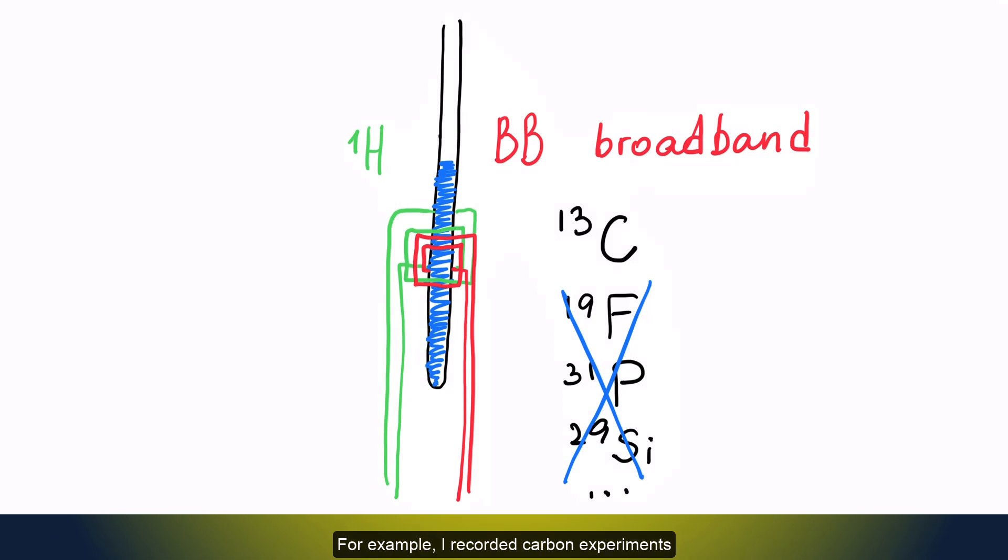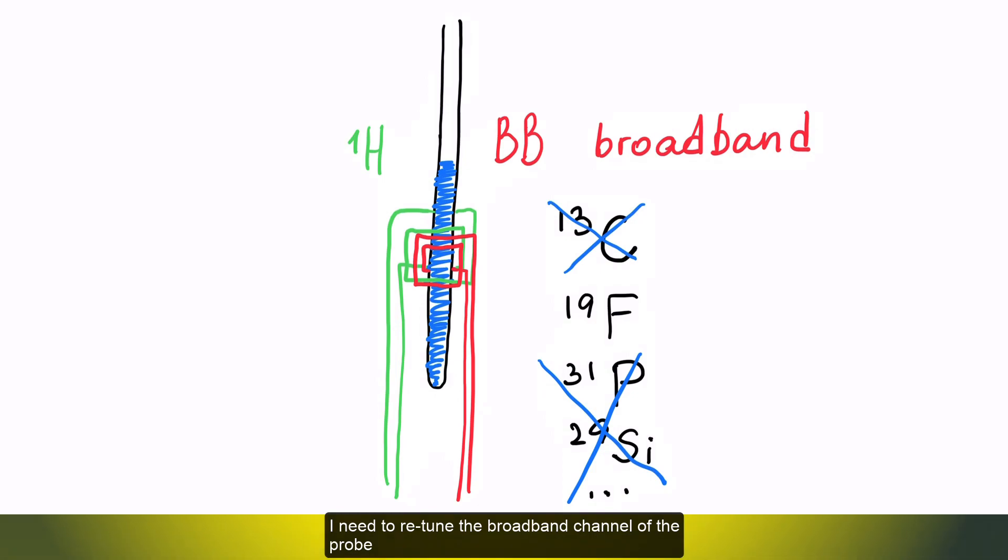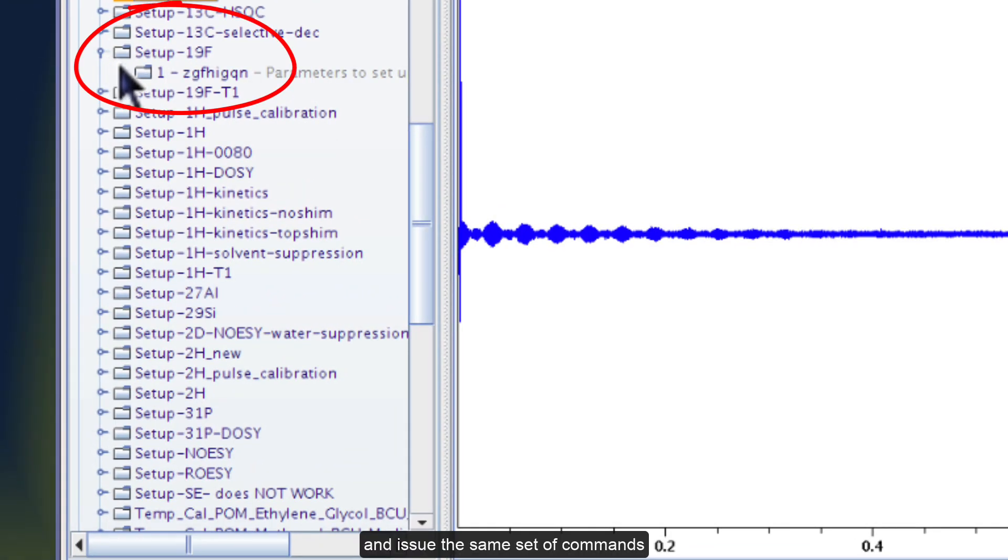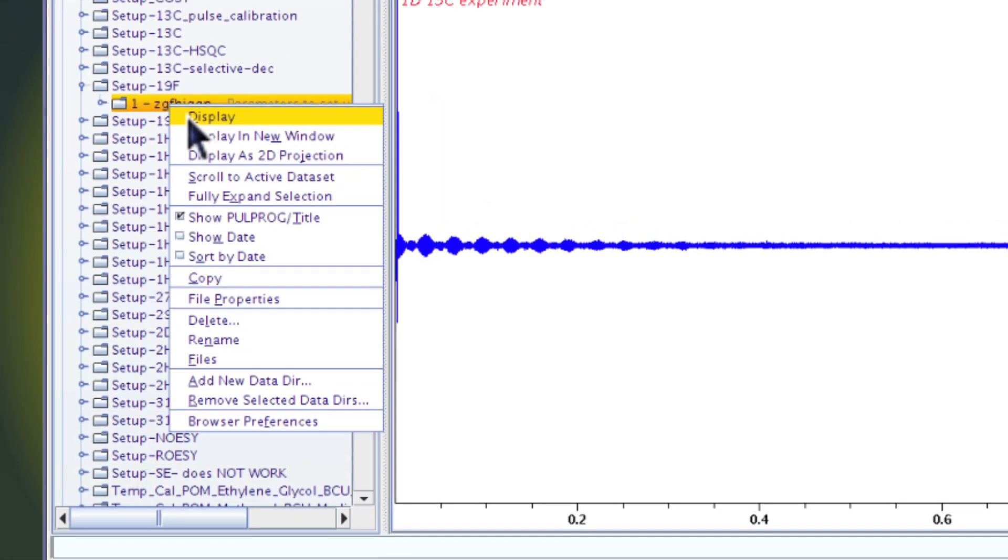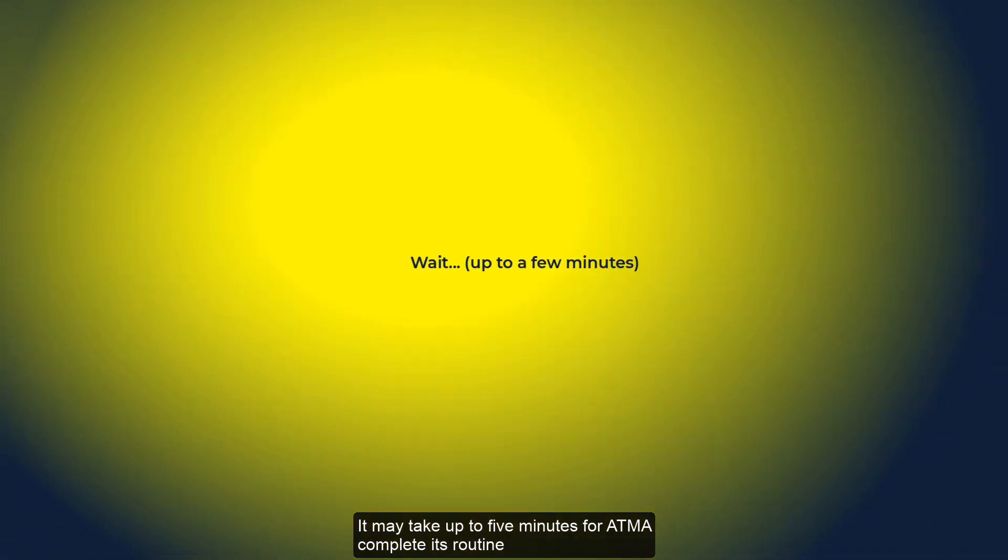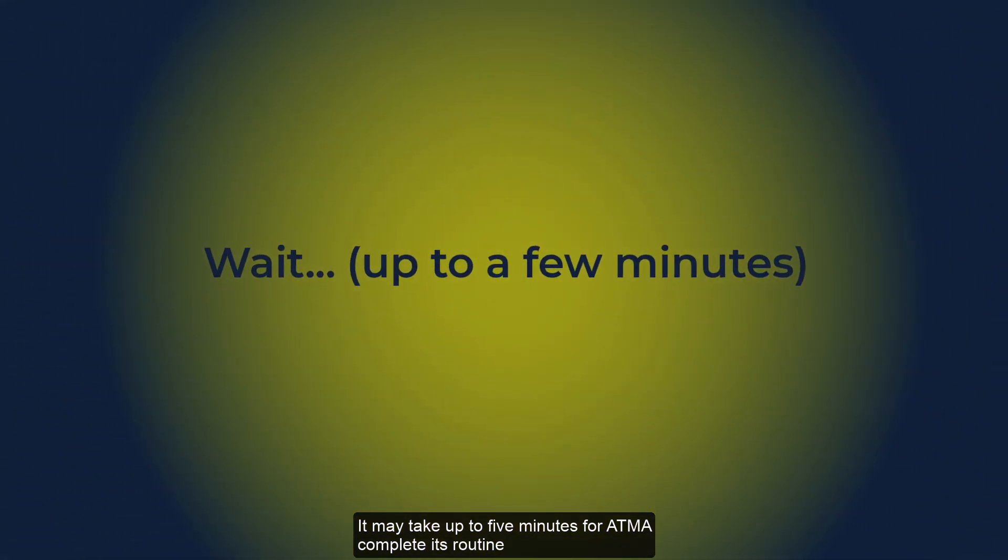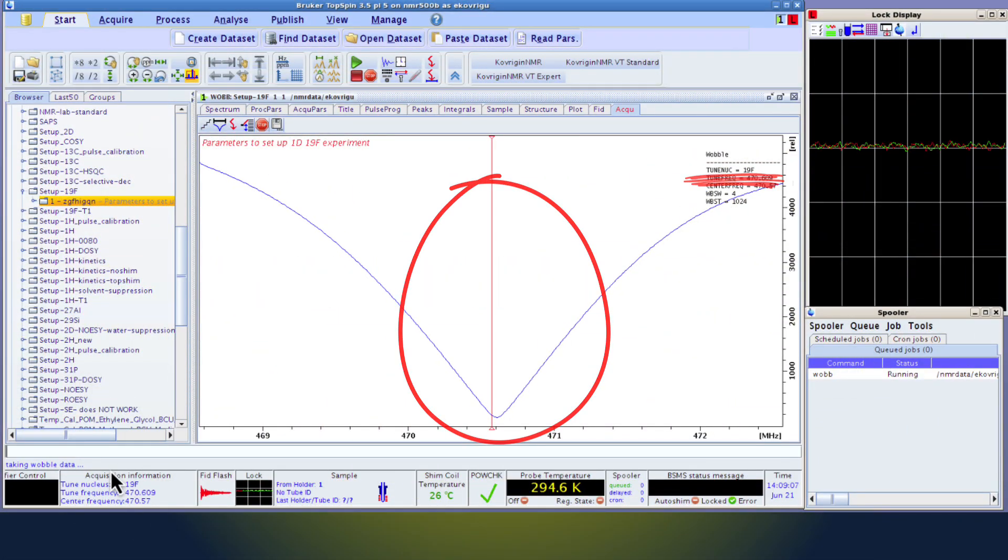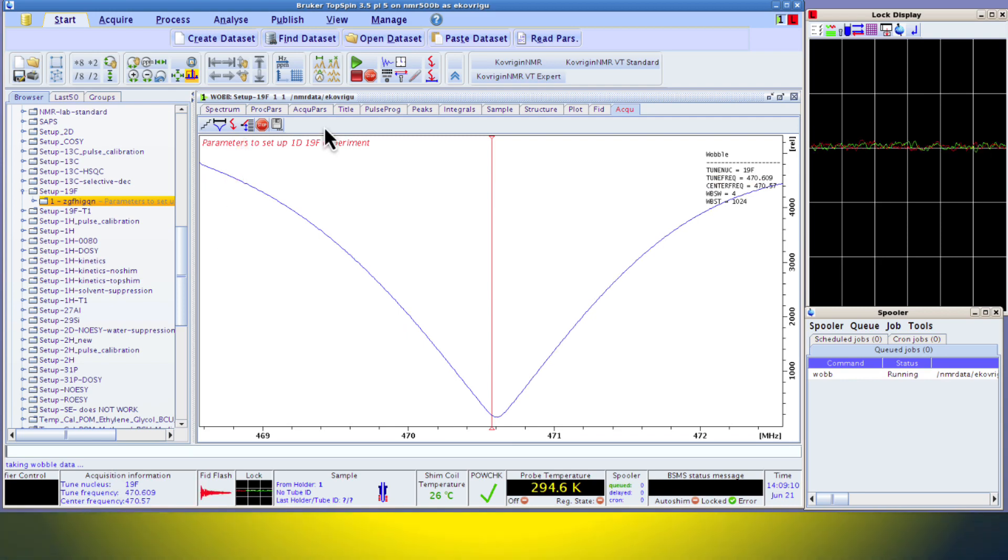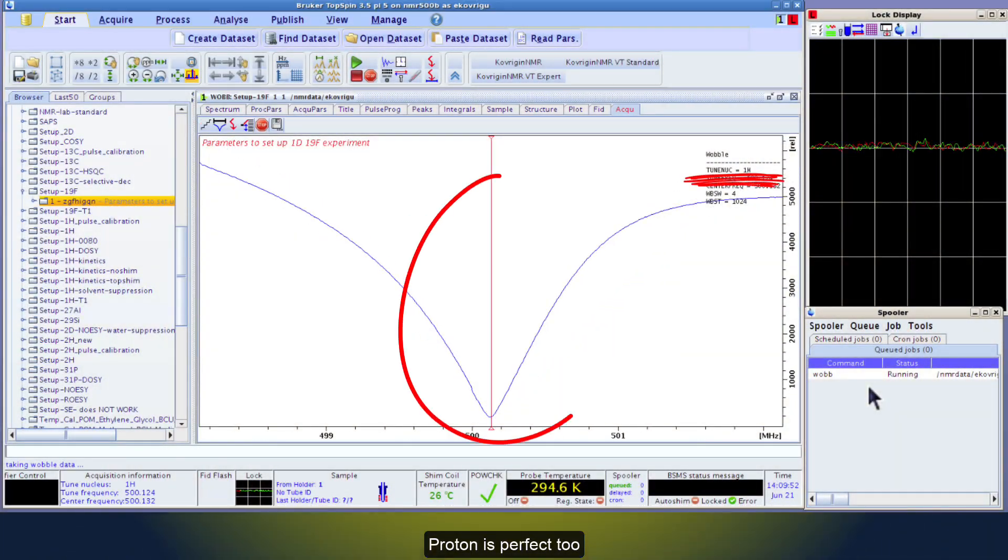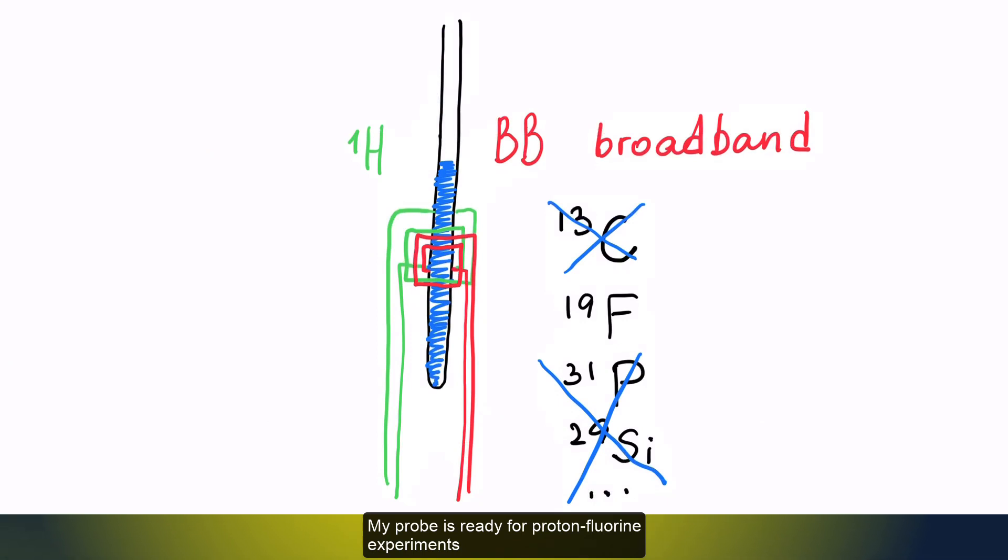For example, I recorded Carbon experiments and now want to record Fluorine. I need to retune the broadband channel of the probe. To do this, I will display the Fluorine experiment and issue the same set of commands – QU-RO-OFF, QU-ATMA, QU-WARB. I will be patient again. It may take up to five minutes for ATMA to complete its routine and for the WARB to display the final results. Fluorine is good. I will check the Proton. Proton is perfect too. My probe is ready for Proton-Fluorine experiments.